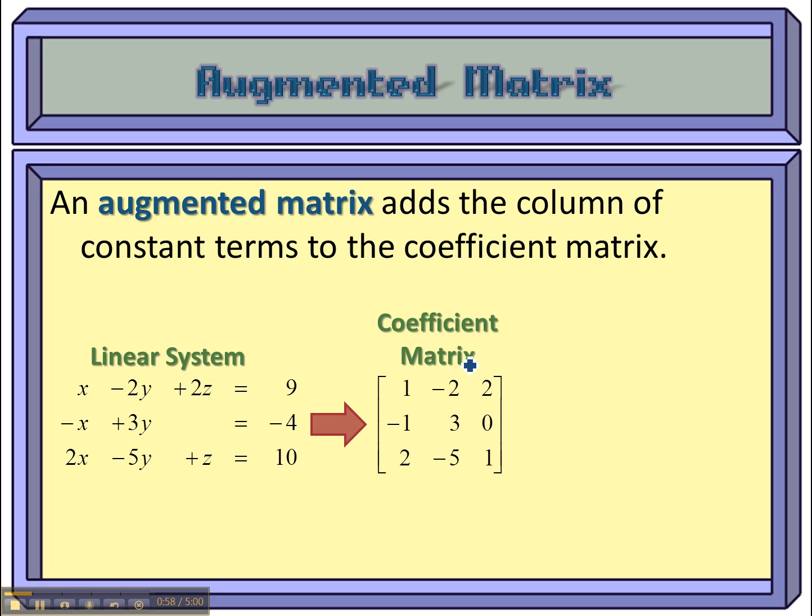So, first of all, the coefficient matrix is going to be combined with the solutions. And just notice that if I don't have a variable in there, I've got a place missing, I'm just going to put a zero there.